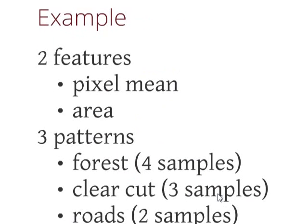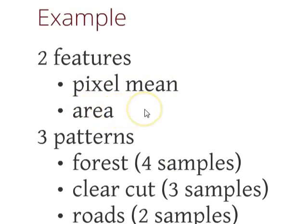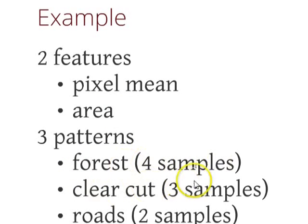Suppose we have two features called pixel mean and area, and we have three patterns: Forest with four samples, Clear Cut with three samples, and Roads with two samples.